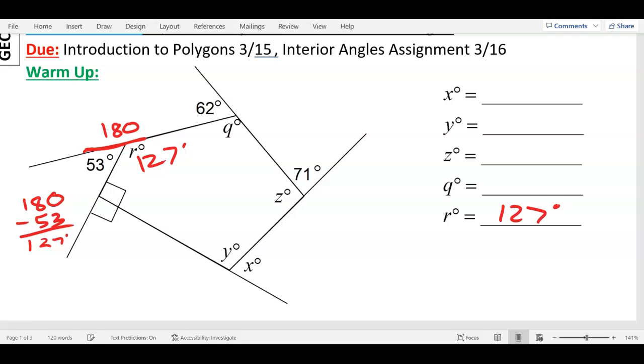Cool. Same thing with Q. I got a straight line of 180. I know 62. 180 minus 62 is what? 118. So Q is 118 degrees.